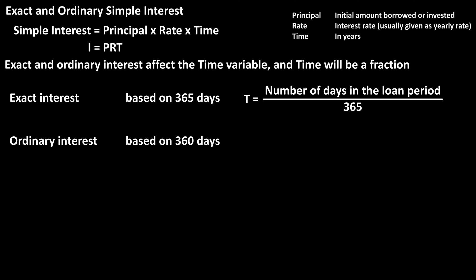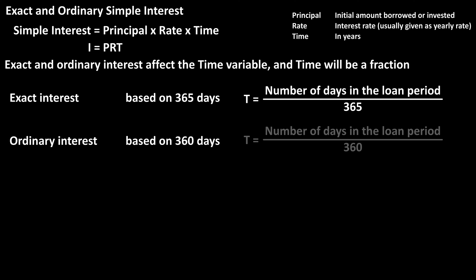If you are using ordinary interest, time, or T, will equal the number of days in the time period over 360. So for ordinary interest, the denominator — the bottom number — will be 360 for 360 days. As you can see, these formulas are the same except for the denominators.